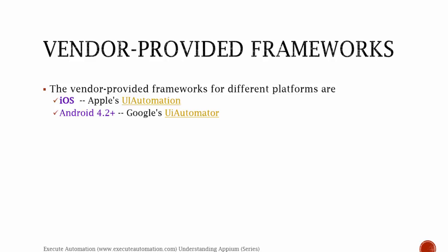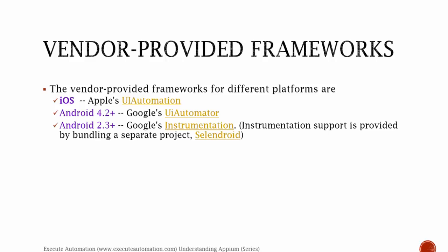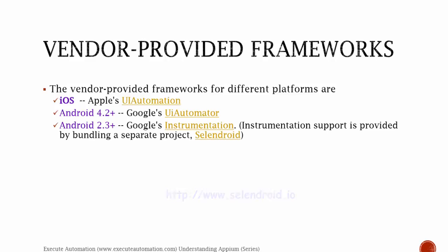Similarly, for Android 2.3 and above versions, Google's Instrumentation is actually used. Instrumentation is something which was available earlier than Google's UI Automator. Instrumentation support is provided by bundling a separate project called Cylindroid. Cylindroid is a separate automation testing tool available at www.cylindroid.io. We'll discuss more about these vendor-provided frameworks and how Appium performs operations in these APIs in upcoming slides of this video.